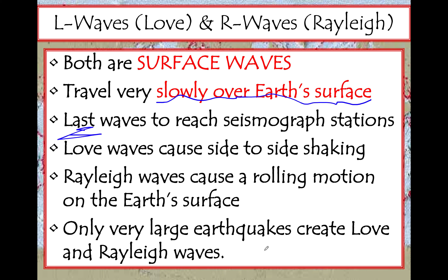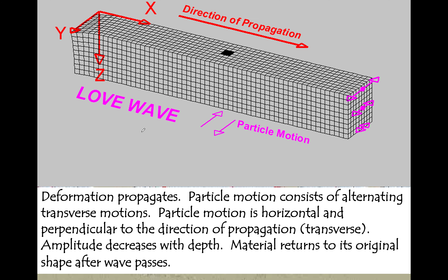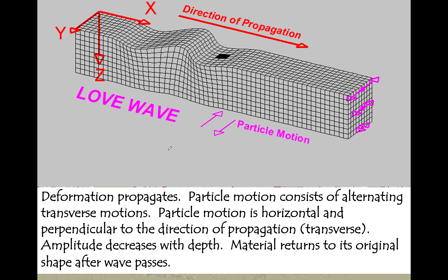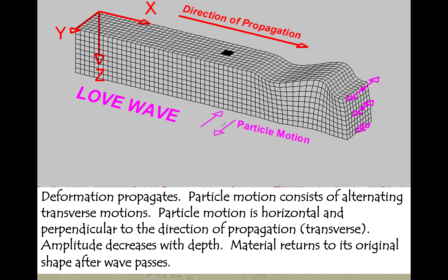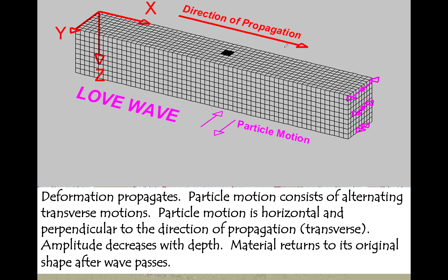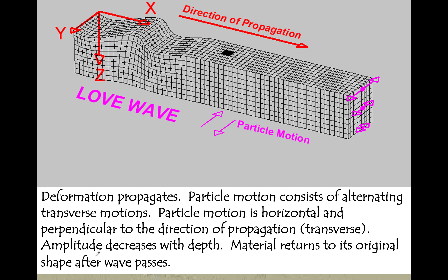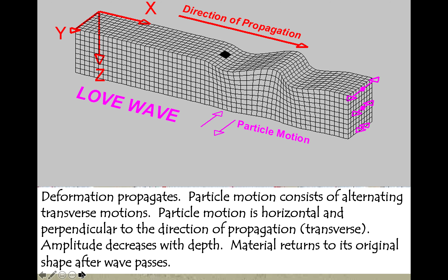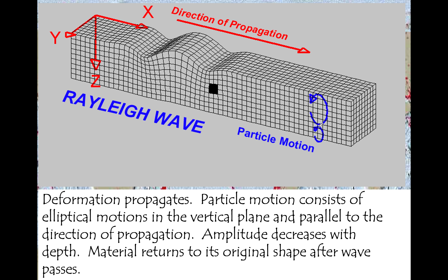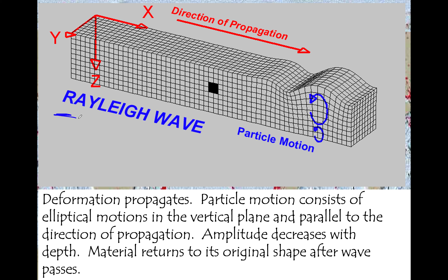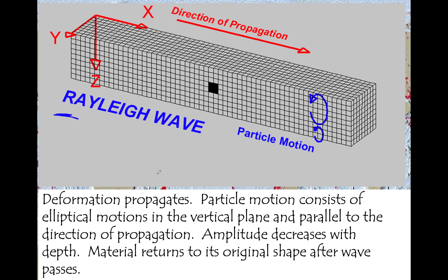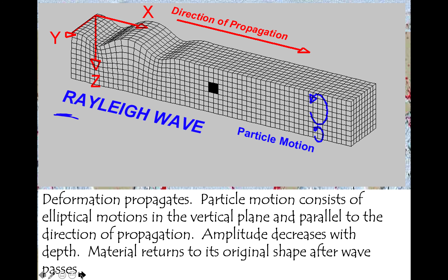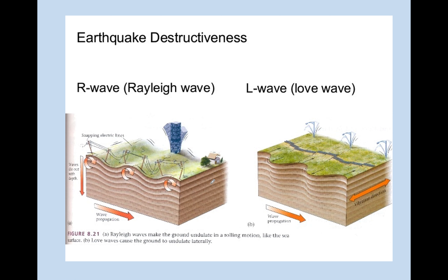Only very large earthquakes create Love and Rayleigh waves — a tiny little earthquake won't produce that rolling motion on the earth's surface. Here's an animation of a Love wave showing the particle motion, which is not parallel to the direction of propagation. And here's an animation of a Rayleigh wave showing that rolling motion. Here's another still showing how Love and Rayleigh waves shake and roll the surface of the earth.